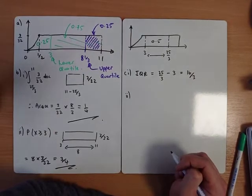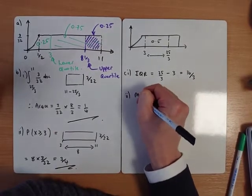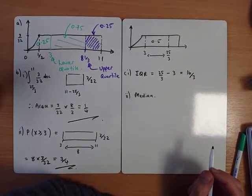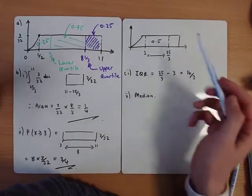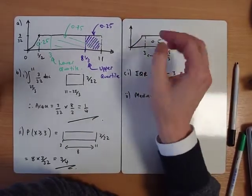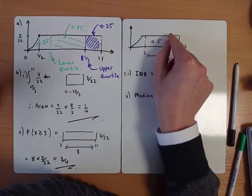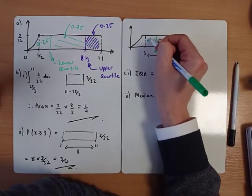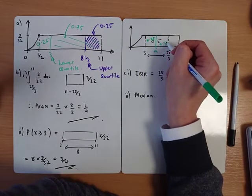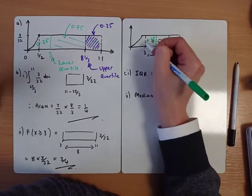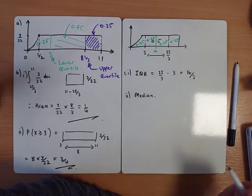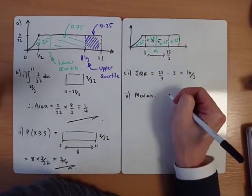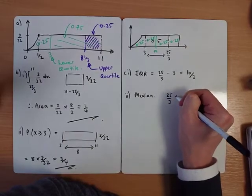Next part wants you to find the median. Now there's a shortcut for us to do this one. I've spotted something, and this only happens because of the symmetry of this shape. Because we've got a rectangle here, the median would lie smack bang in the middle. That area there would be 0.25, that area there would be 0.25, that area there would be 0.25, and that area there would also be 0.25. So because we've got this symmetrical shape, the median would be in the middle of those two.